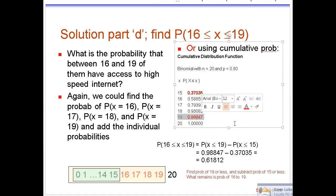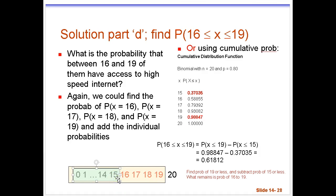But 19 or less of course includes all the numbers that are 19 or less than 19. But I don't want all those numbers. I only want the numbers between 16 and 19. So I take all that probability from 19 all the way back to zero. That answer is 0.98847. And what I then do is subtract from that the numbers below the 19 that I don't want. And I don't want the probability of 15 or 14 or 13 all the way back to zero.